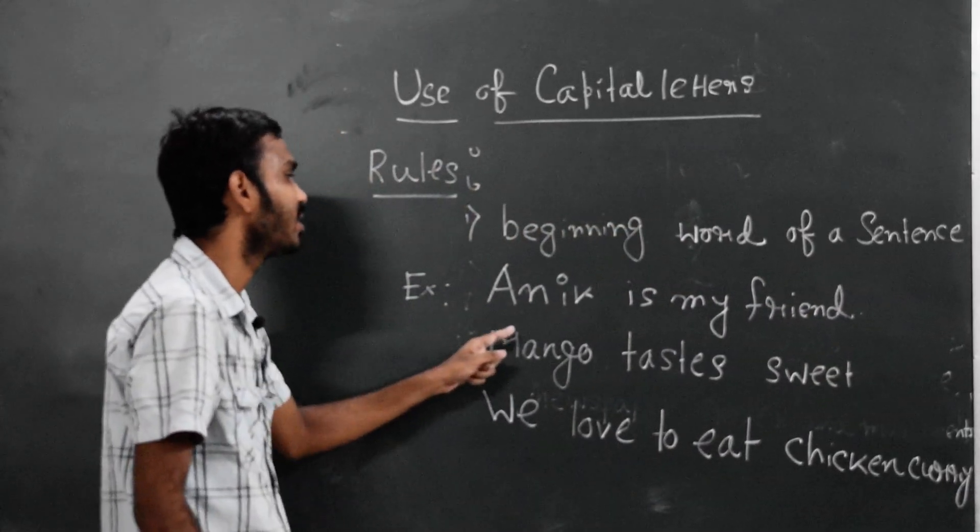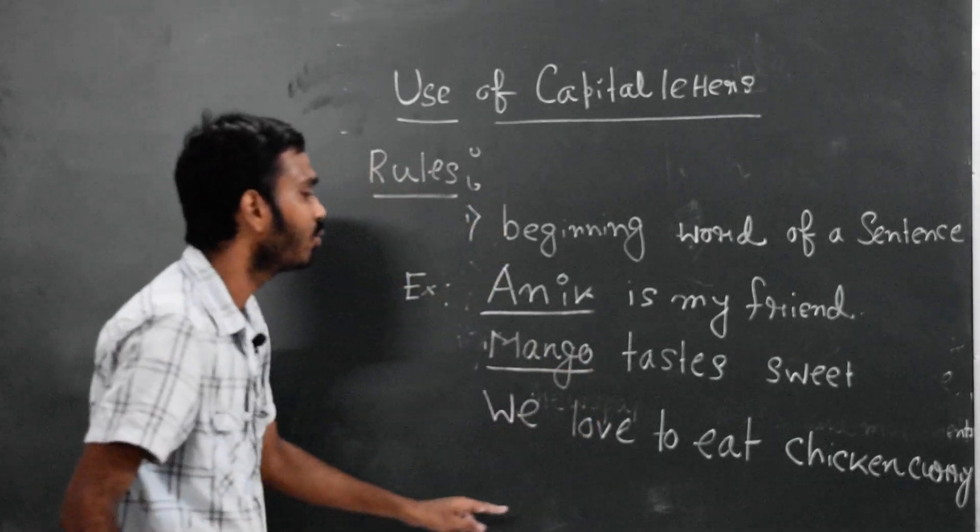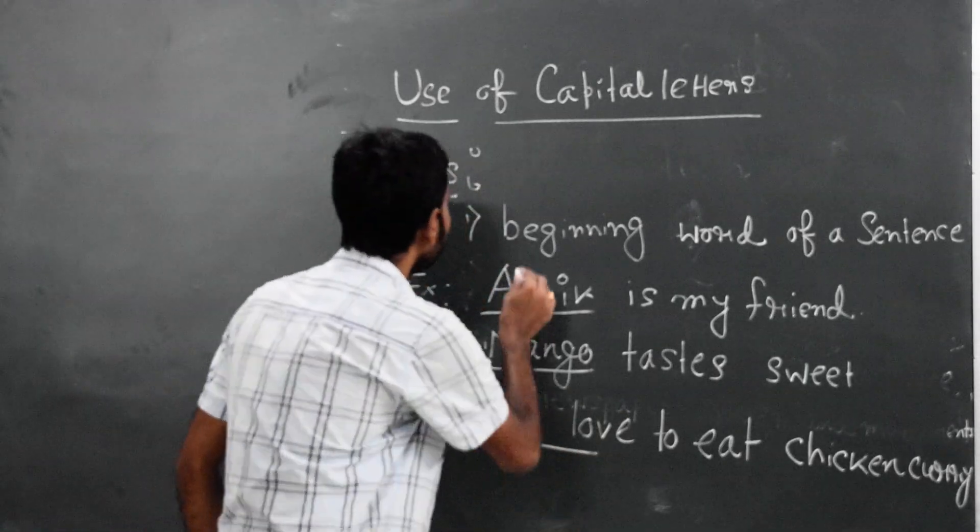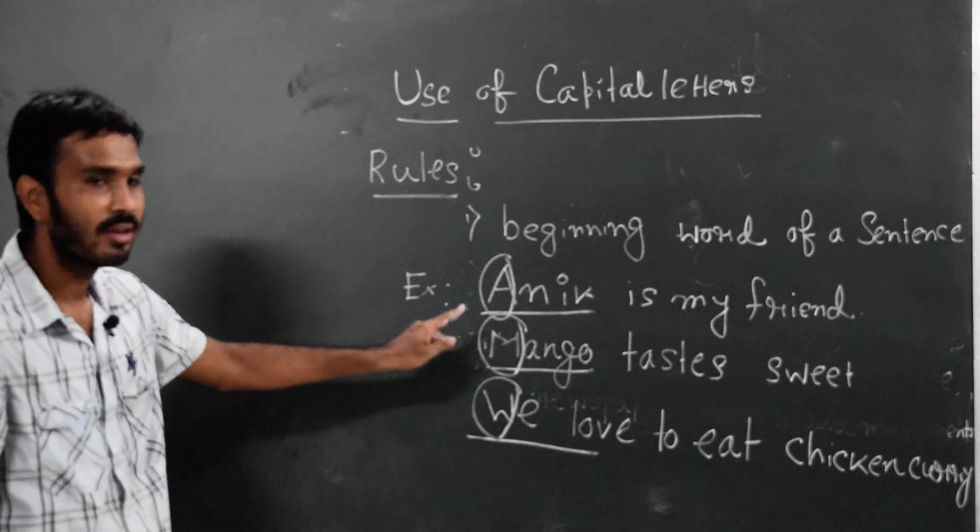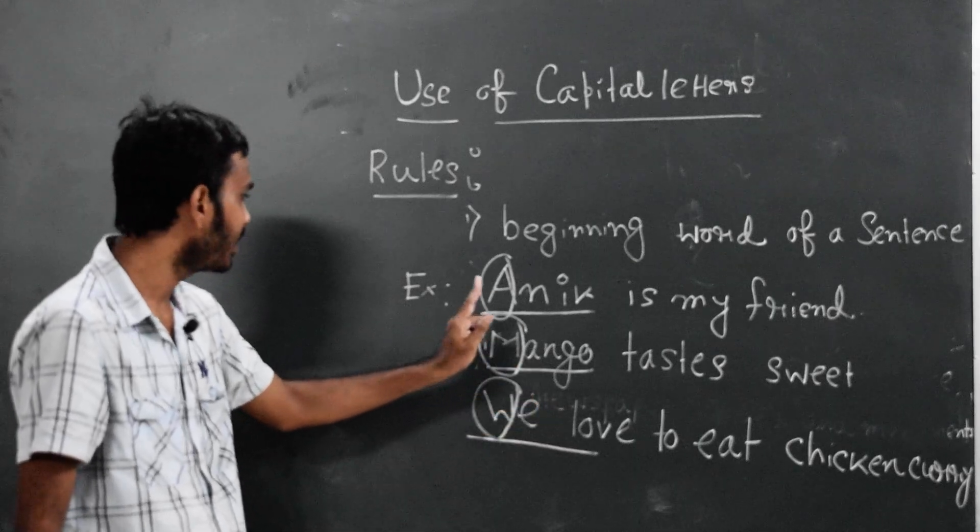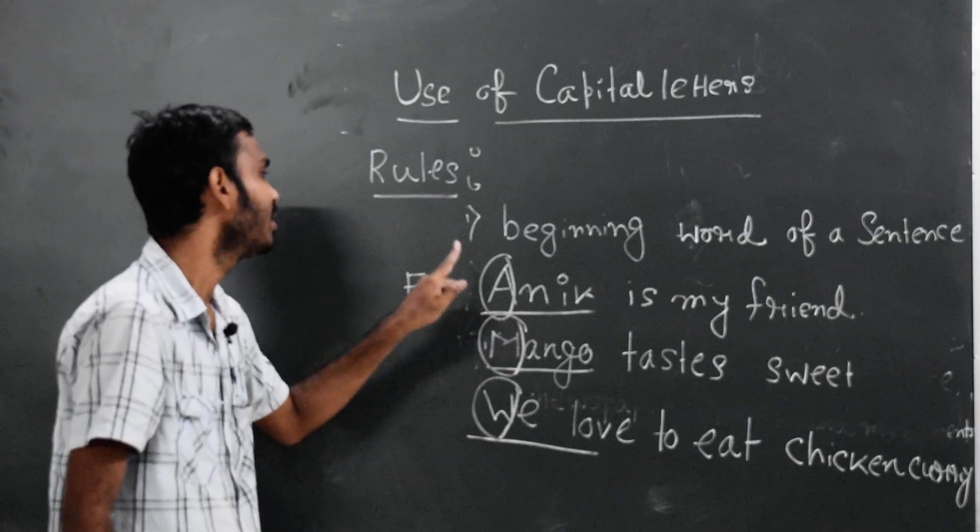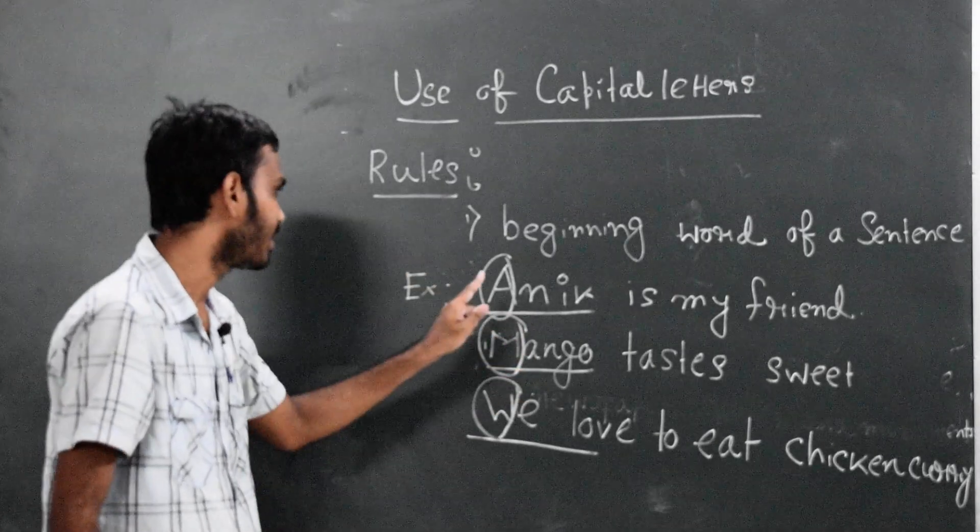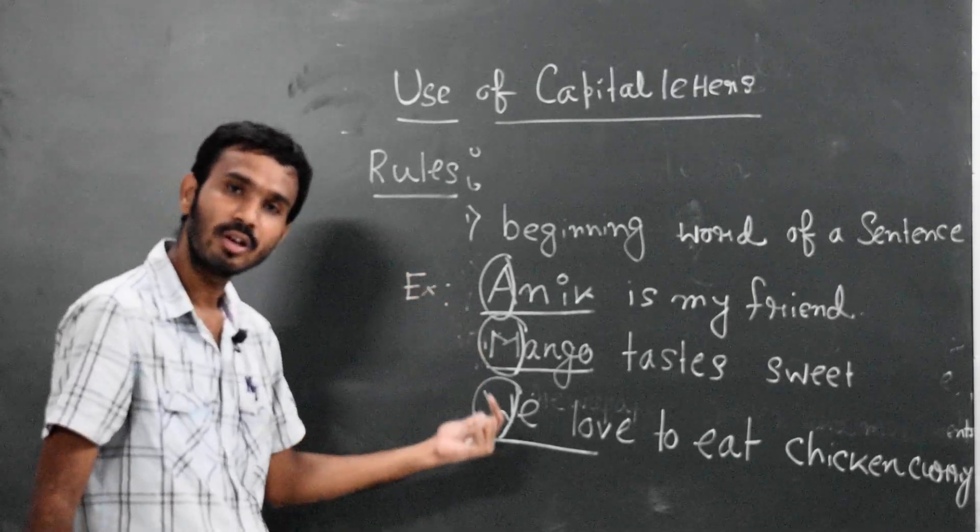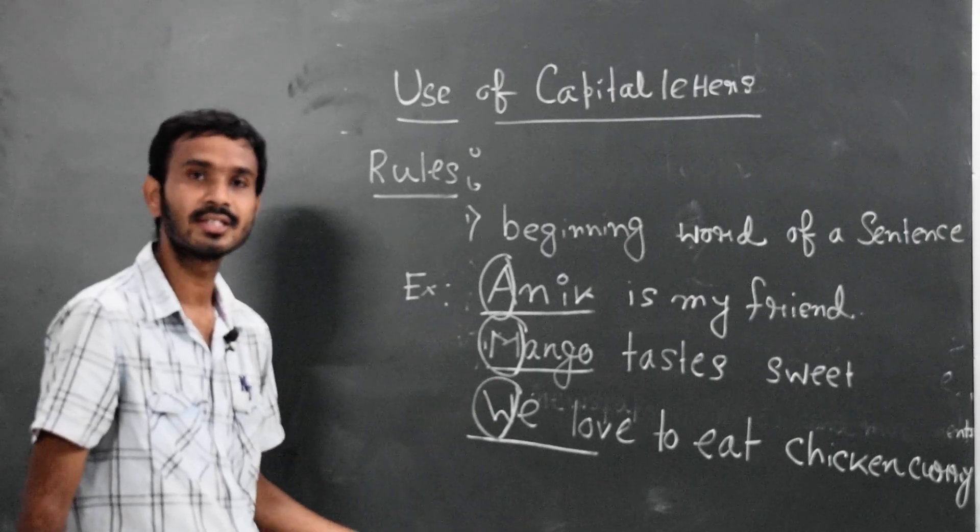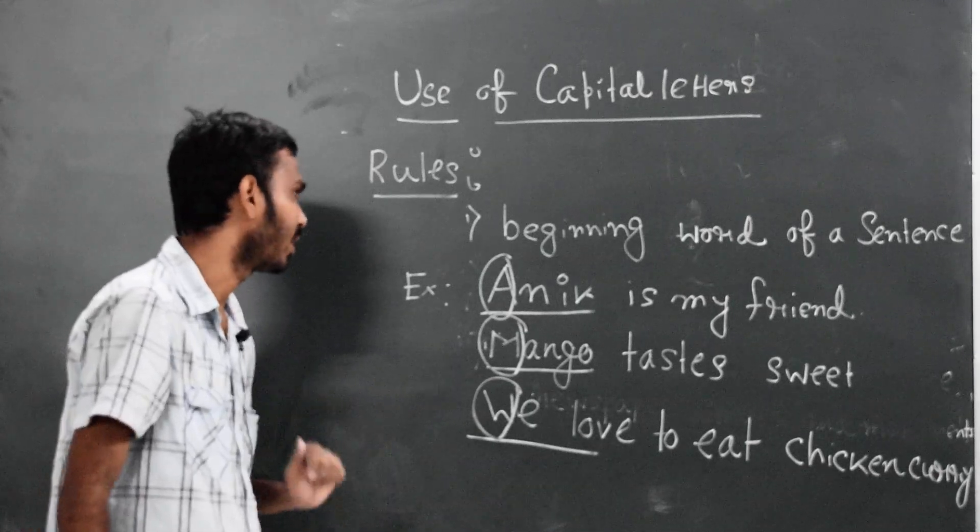Three sentences: Anix is my friend. Mango tastes sweet. We love to eat chicken curry. In every sentence, the beginning word—Anix, Mango, We—begins with a capital letter. Therefore, we need to focus and keep in mind that the beginning word of a sentence usually takes a capital letter as the initial word.